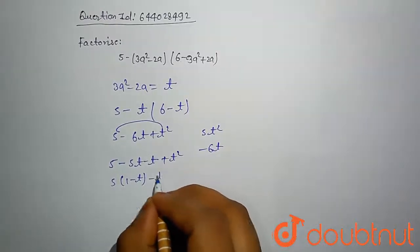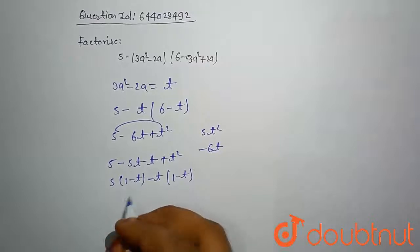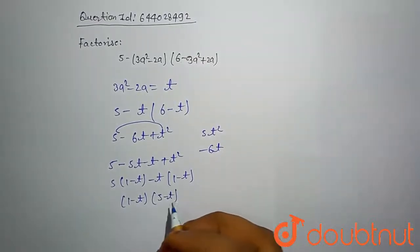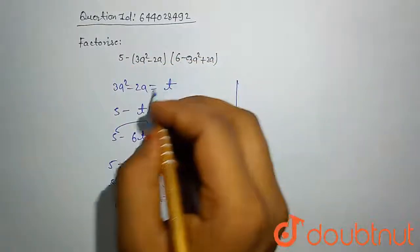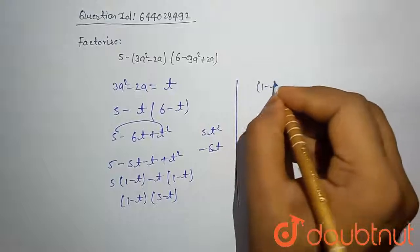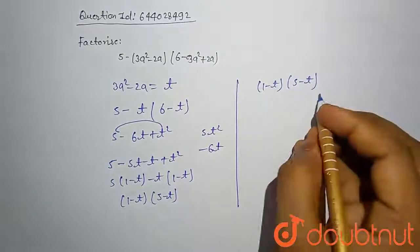In other brackets 5 minus t. Factorization of this is (1 - t) in other brackets (5 - t). Let's put value of t.